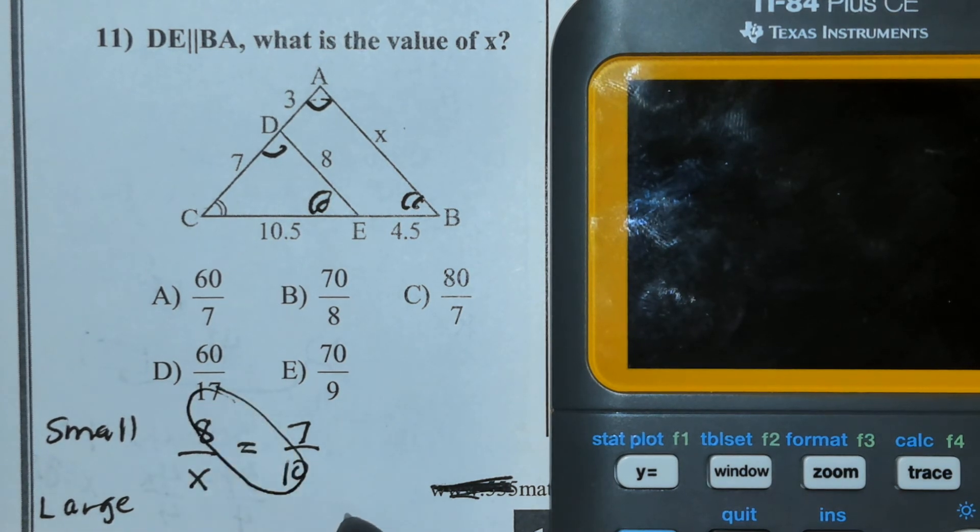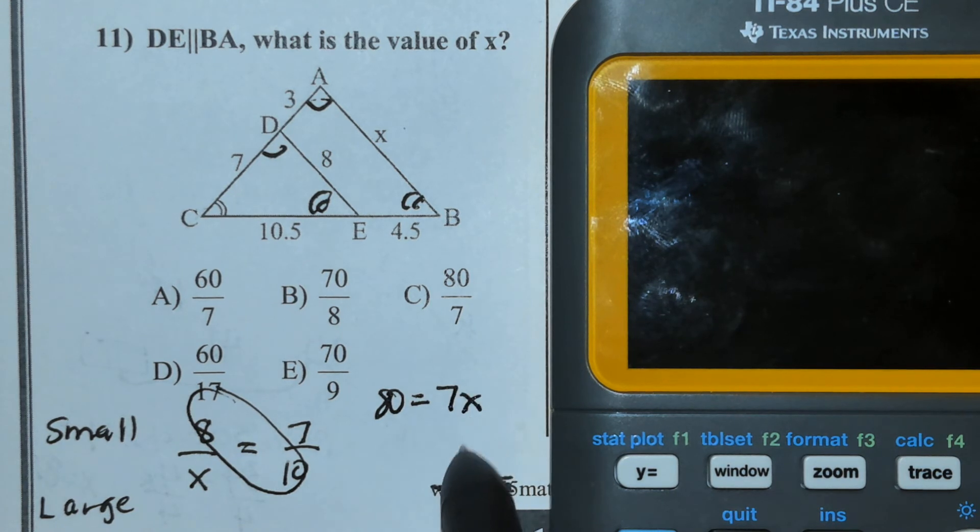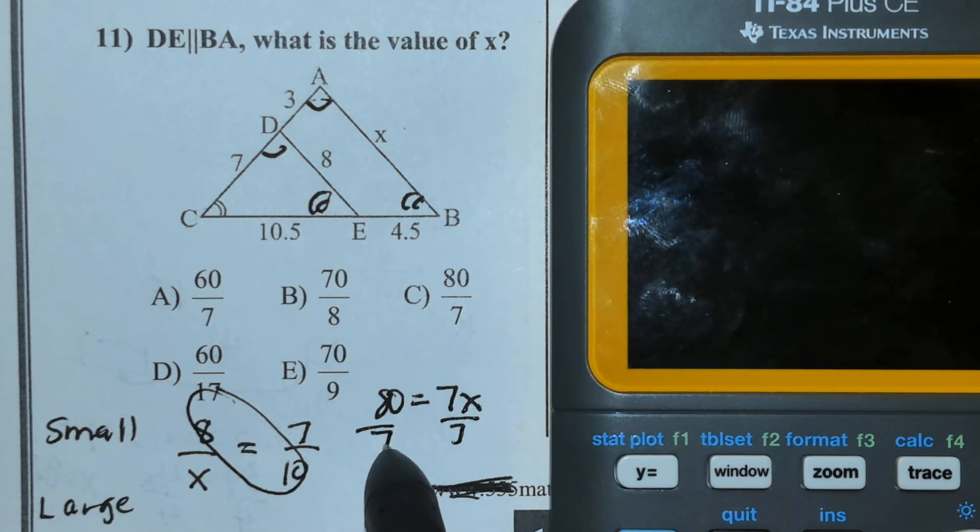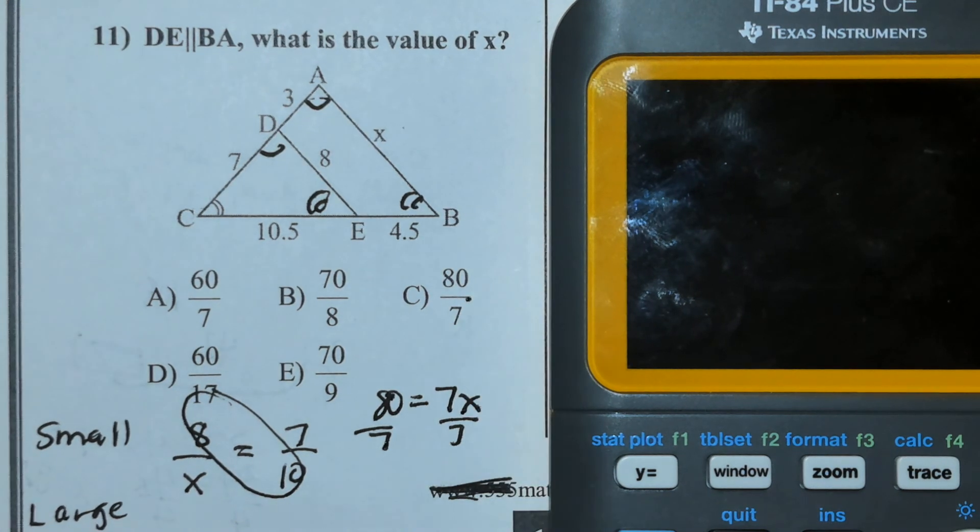I'm going to cross multiply to solve. So, 8 times 10 is 80, 7 times X is 7X. Divide by 7, divide by 7, I have 80 over 7, or option C.